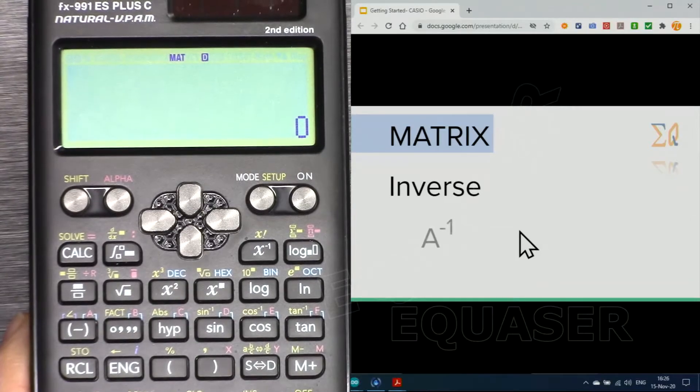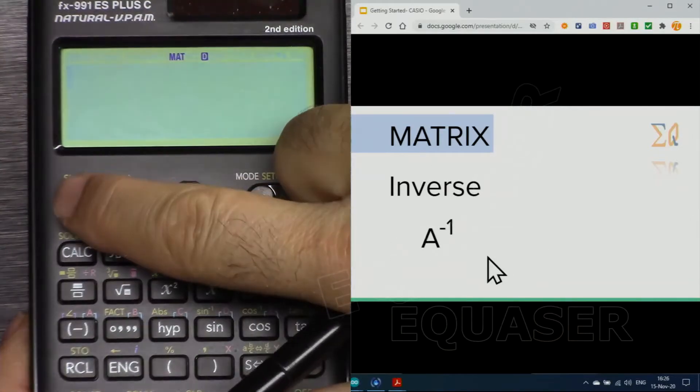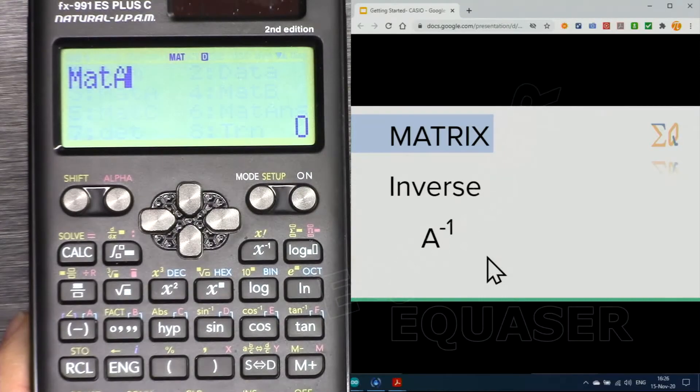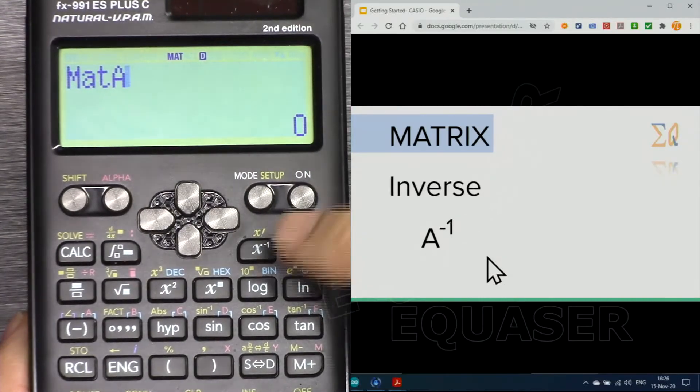Now if you want to get inverse of the matrix, for example inverse of matrix A, press shift 4, bring matrix A 3, and then for inverse we press this button.